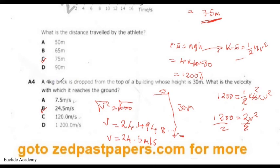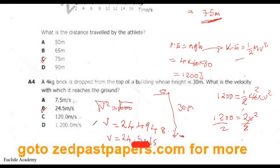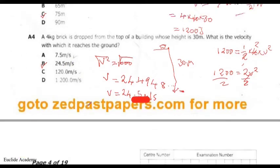To recap: the brick was 30 metres high with a mass of 4 kilograms, giving PE = 1200 joules. By conservation of energy, this becomes kinetic energy at the ground. Using KE = ½mv², we find v = 24.5 metres per second.